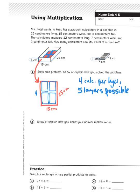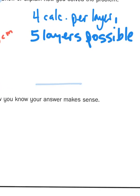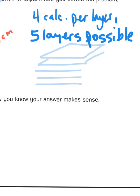So, solve this problem. Show or explain how you solve the problem. I'm doing everything except providing the answer here. So, if I have five layers possible, I would have five layers of calculators that would fit in the box. There are my five layers. And then each layer is going to have four calculators per layer.